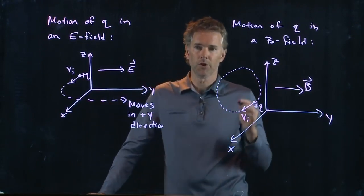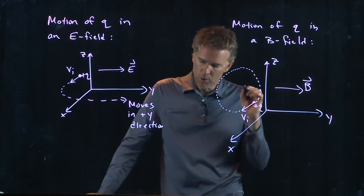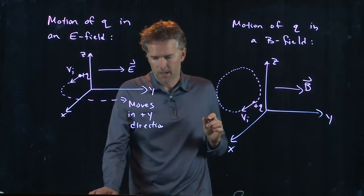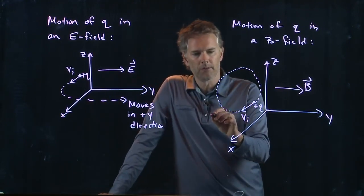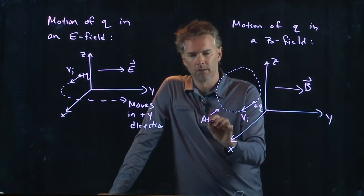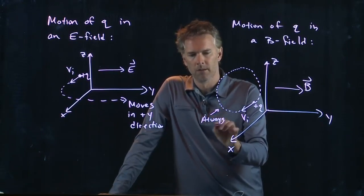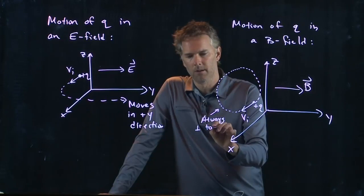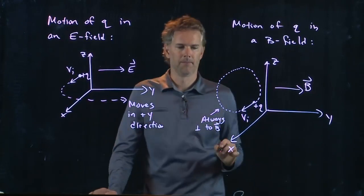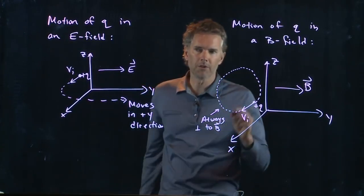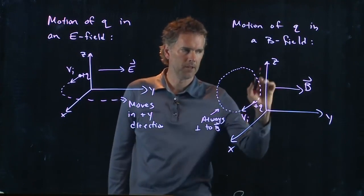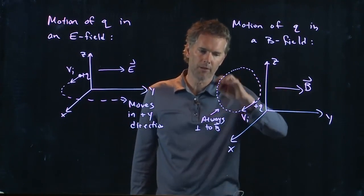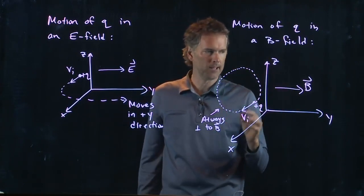And so you're going to get a V cross B force that makes it move in a circle. And that circle is always perpendicular to the B field. The force is perpendicular to the velocity and the B field. And therefore, this circle is perpendicular to the B field.